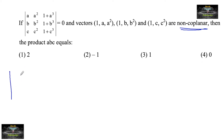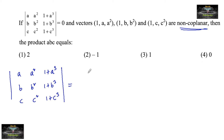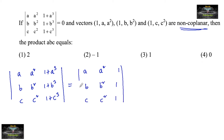We can write the determinant with rows (a, a², 1+a³), (b, b², 1+b³), (c, c², 1+c³) as the sum of two determinants: the first with rows (a, a², 1), (b, b², 1), (c, c², 1), and the second with rows (a, a², a³), (b, b², b³), (c, c², c³).